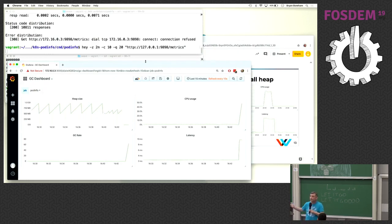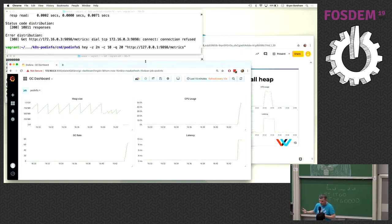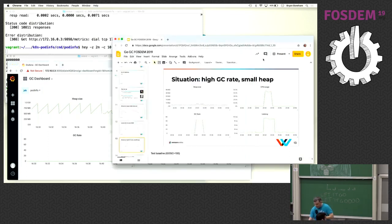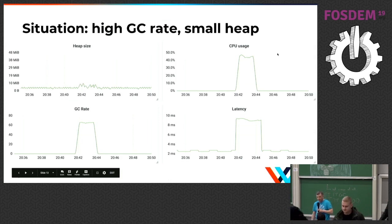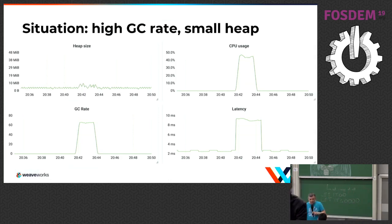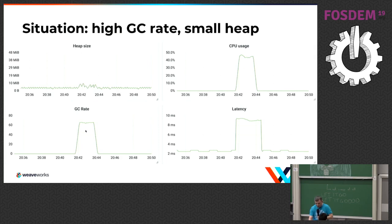So we observe - let me put the pre-canned stuff up on the screen. The heap was like tiny, like four megabytes or something like that. I hit it with 200 requests a second and it went up to about 10 megabytes. The CPU usage went way up, the garbage collection rate went way up. Before, it was garbage collecting like once a minute; now it's garbage collecting 60 times a second.